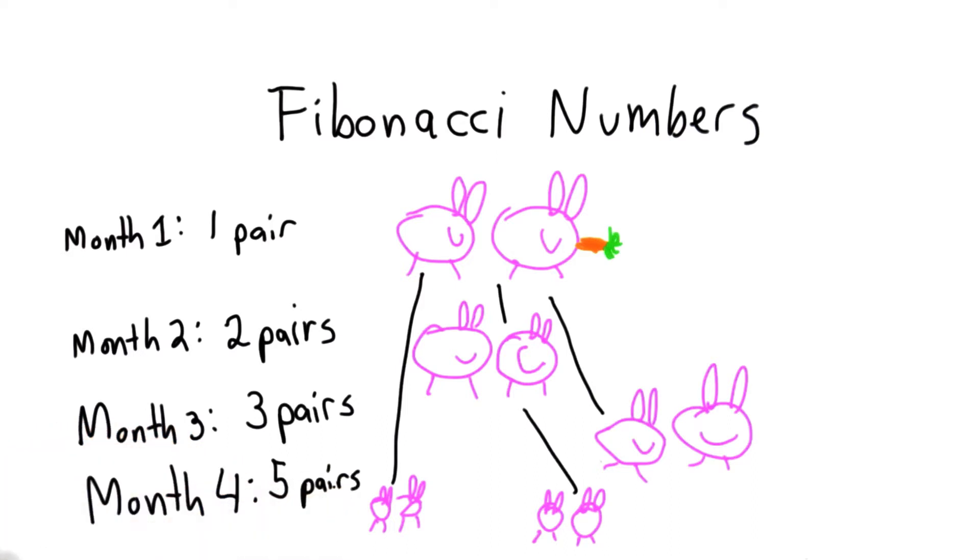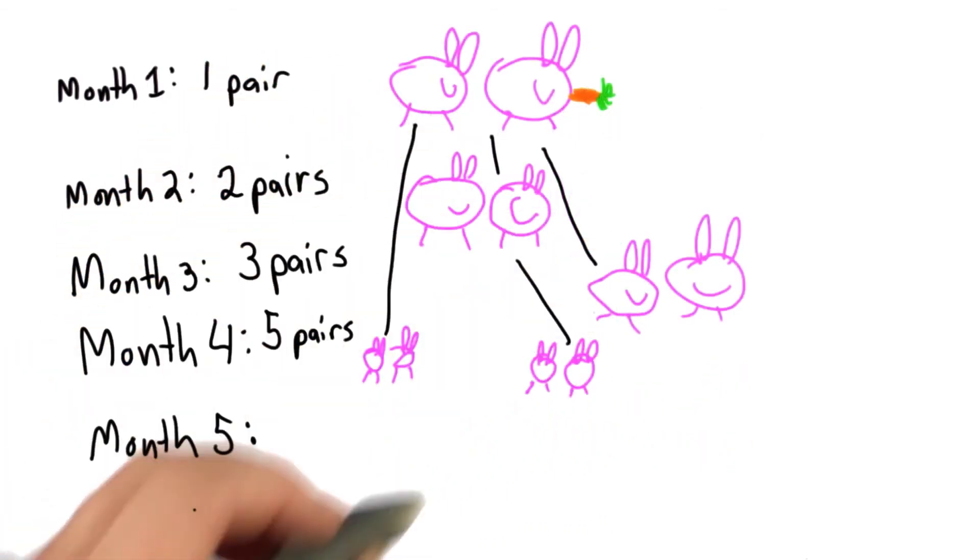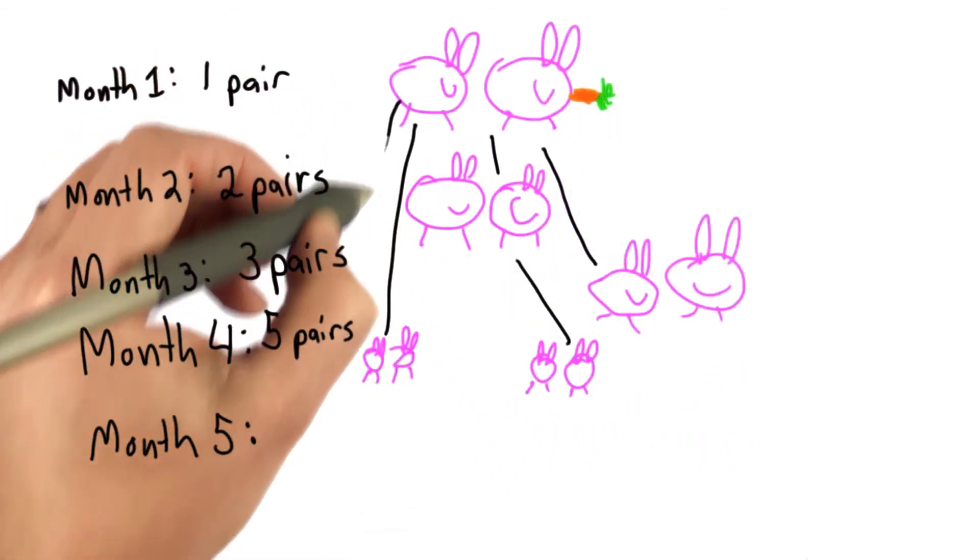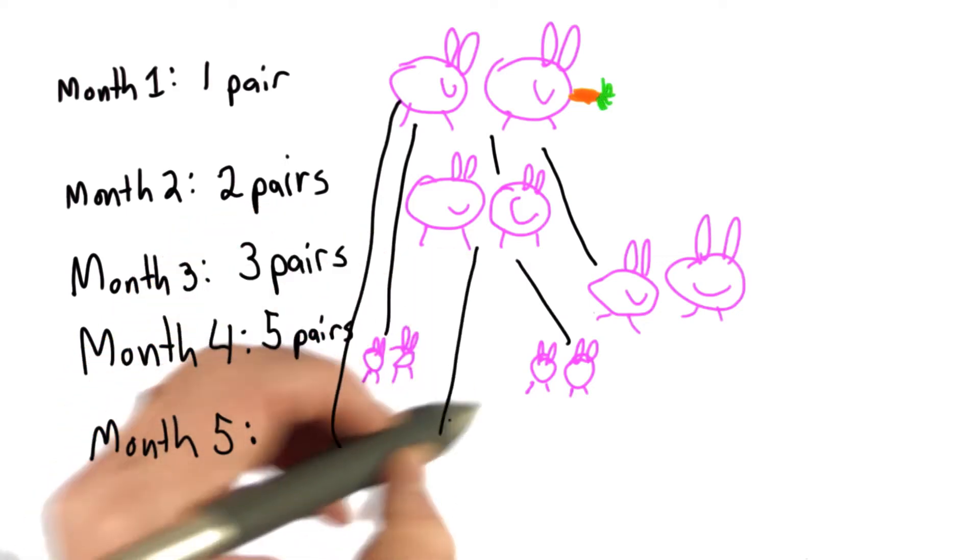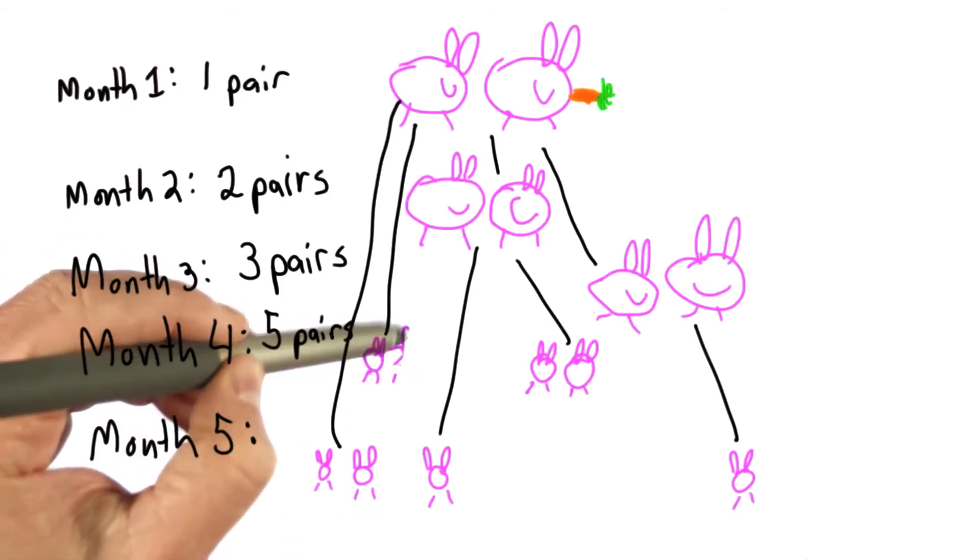This keeps going. The model assumes that rabbits never die, that every month each pair of mature rabbits produces a new pair of rabbit babies, and it takes one month for a pair of rabbits that's born to become mature. So in month five, the three mature pairs of rabbits will all produce new offspring. We have three new offspring, and the two that are a month old, that were born in month four, will now become mature.